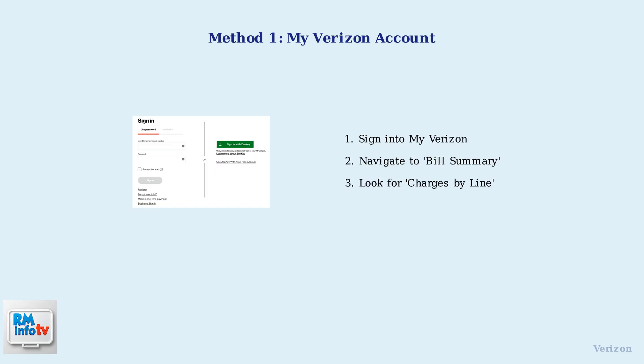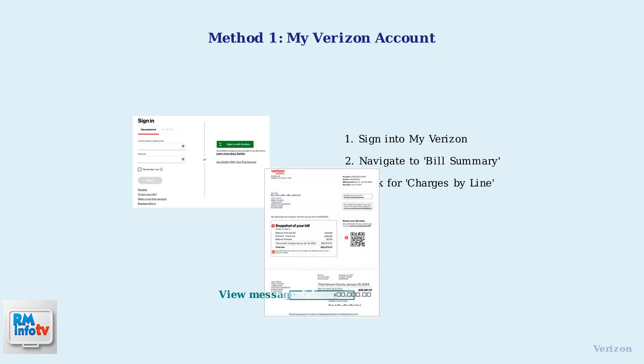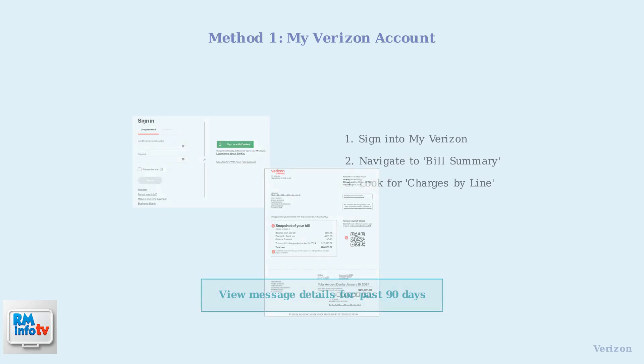The primary method for viewing your text message data is through your My Verizon account, accessible via the website or the mobile app. Once logged in, navigate to the Bill Summary or Account Activity section. Look for charges by line or line usage details, then select the specific phone line you want to view.